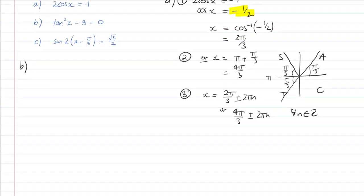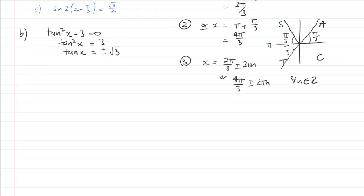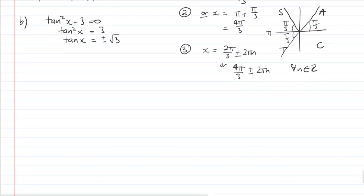Now let's look at question b: tan²x - 3 = 0. This gives us tan²x equals 3, which gives us tan x equals plus or minus √3. So we've got two trig equations in one. We're asking when is tan x equal to plus or minus, which means it can be negative or positive, which means it can exist in all four quadrants.